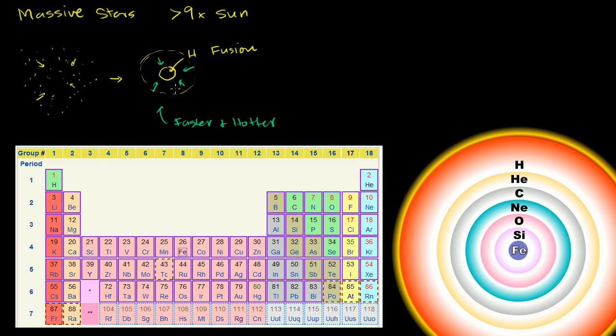And so even this stage is going to happen over a much shorter period of time than for a star the mass of our sun. Our sun's life is going to be 10 or 11 billion total years. Here we're going to be talking about things in maybe the tens of millions of years. So a factor of 1,000 shorter lifespan.